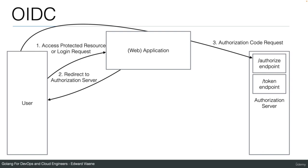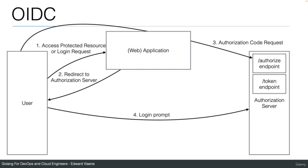The user's browser goes to the authorize endpoint to ask for an authorization code request. The authorization server may then redirect to a login prompt — the login and password box you see on websites. The authorization server asks the user to log in, so the user sends their login and password to the authorization server.